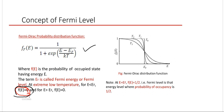This distribution function tells how the carriers will be occupied and populated. When you apply some energy greater than Ef, that characteristic energy is called Fermi energy. The conduction band is basically a group of discrete energy levels, so when carriers are populated, first the lower energy levels will be populated followed by the upper levels. It is a strong function of temperature T.